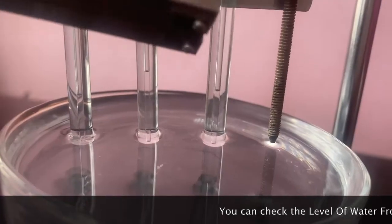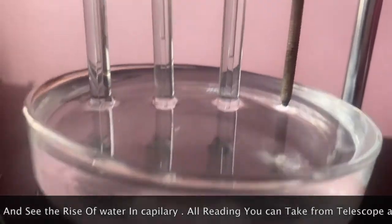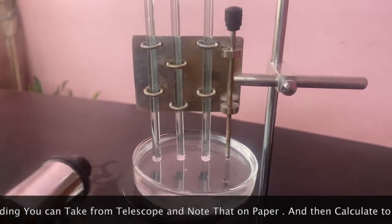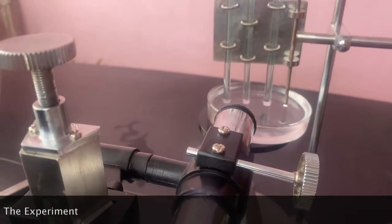You can check the level of water from the pointer and see the rise of water in the capillary. All readings you can take from the telescope and note that on paper, and then calculate to complete the experiment.